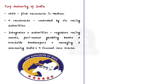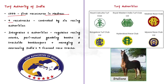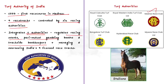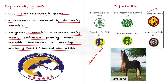Horse racing in India is over 200 years old. The first race course was set up in Madras in 1777. Today, India has a well-established racing and breeding industry conducted on nine racetracks by six racing authorities. The Turf Authorities of India integrates all six authorities and regulates racing events, paramedical gambling booths and trackside bookkeepers. Only Indian-bred racehorses can participate in racing, and India has a well-established breeding industry with stallions imported from around the world.